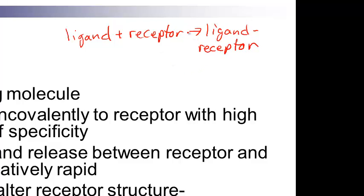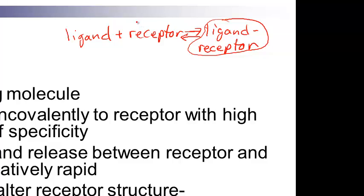There's an equilibrium here based on how tightly the ligand binds to the receptor. You have a binding constant, which represents how much of the ligand you need to bind half of those receptors. The better the ligand binds to the receptor, the more it favors the complex. With less specificity, it favors the unbound side of the equation.